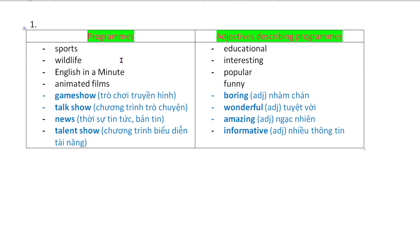For example, ngoài những từ này thì chúng ta có thể thêm: for programs - 'game show' chương trình trò chơi truyền hình, 'talk show' chương trình trò chuyện, 'news' bản tin, 'talent show' chương trình biểu diễn tài năng. For adjectives describing programs: 'boring' - nhạt chán, 'wonderful' - tuyệt vời, 'amazing' - ngạc nhiên, 'informative' - nhiều thông tin. You can add more if you can.